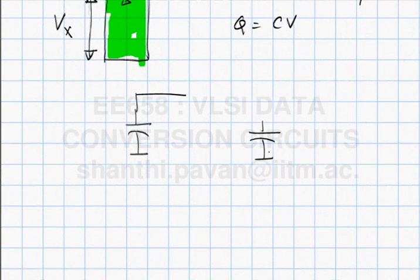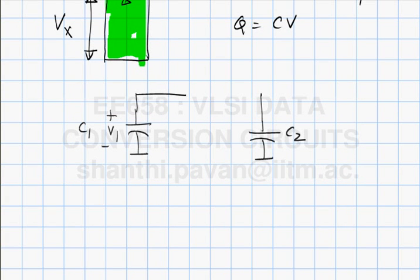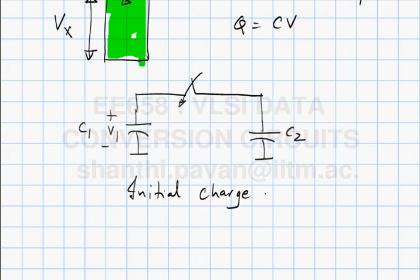The basic idea is to take a capacitor with some charge on it and transfer all that charge onto a capacitor that is half as large — then the voltage doubles. If you want to transfer charge from one capacitor to another, you connect the two together. Let capacitor C1 be charged to V1, and C2 be initially uncharged. Connect them together. The initial charge on C1 is C1·V1.